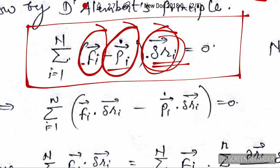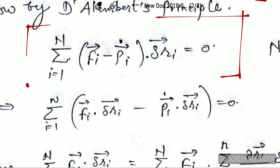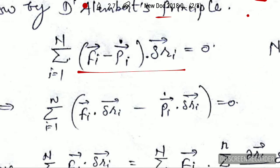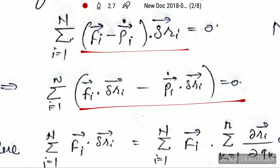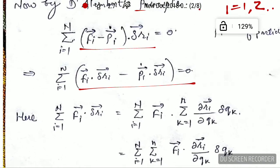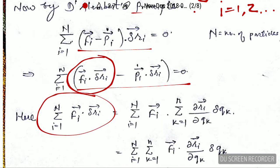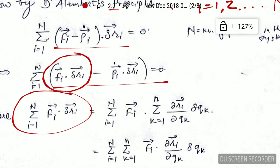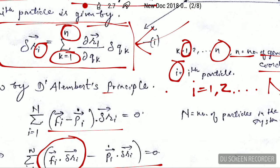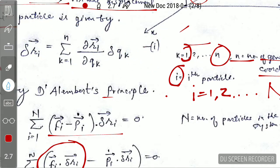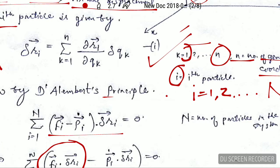What happens in the next step is that delta r_i will multiply with the force and the derivative of momentum. It follows the distributive law, giving us this expression. We have to focus especially on this particular term. If I substitute the value of delta r_i — that is, the virtual displacement from equation one — you can see the virtual displacement plugged into the expression.